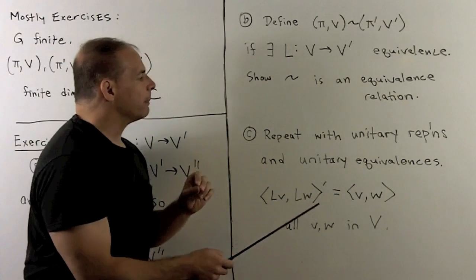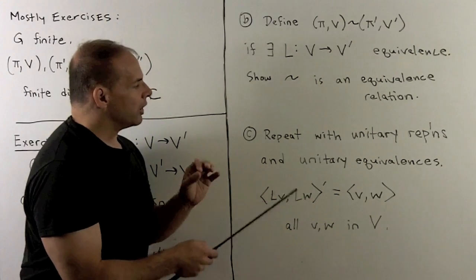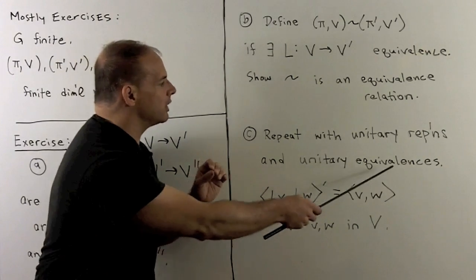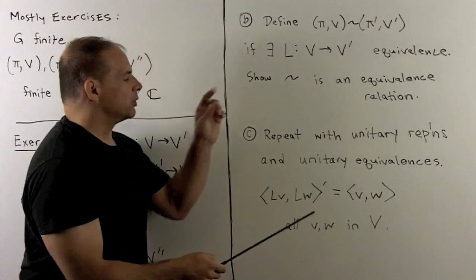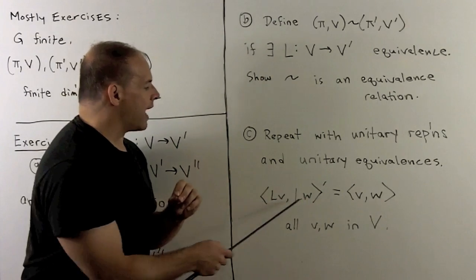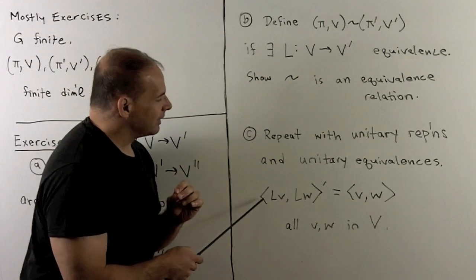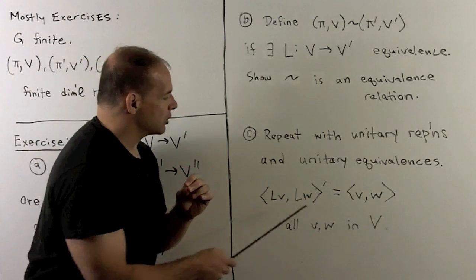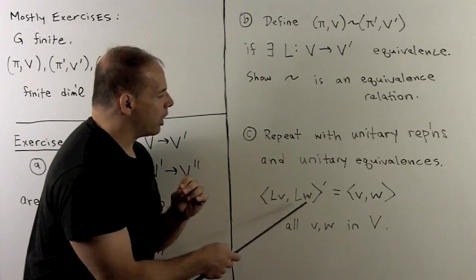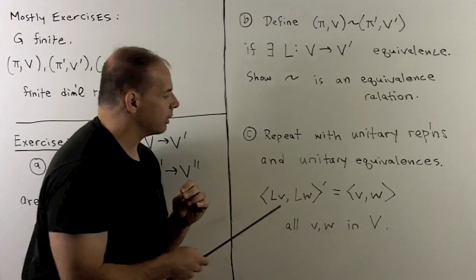Just remember, for a unitary equivalence, once we find our equivalence L, we'll want it to preserve the inner products — so it carries one inner product space to the other.